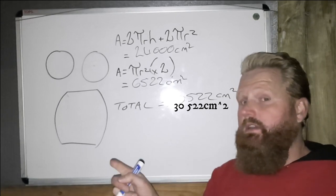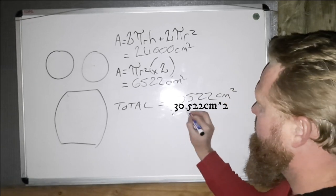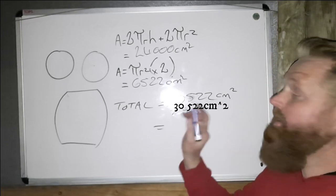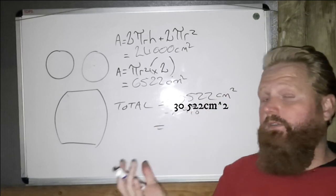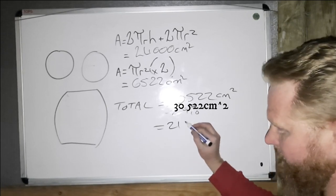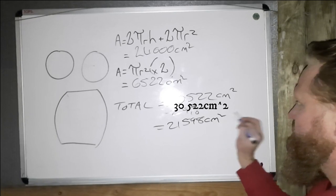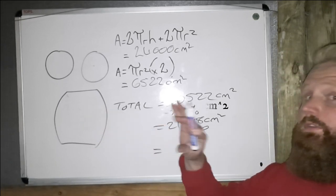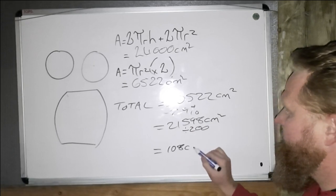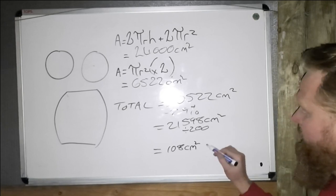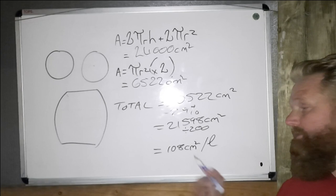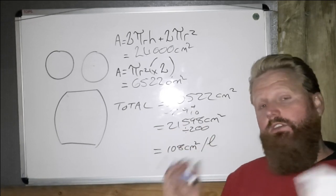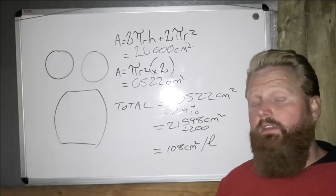Keeping in mind this is the exterior of the barrel, we previously determined that 29% of that is wood. So subtracting 29% from the total surface area gives us 21,598 square centimeters of internal surface area. Dividing this by 200 — the volume of the barrel in liters — gives us 108 square centimeters per liter of spirit. That is the internal surface area of a standard 200-liter barrel.